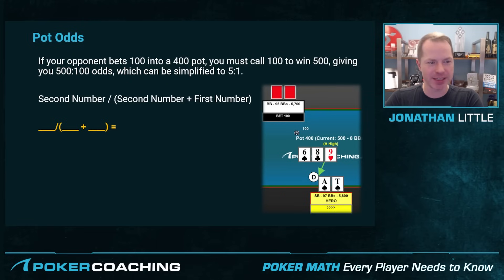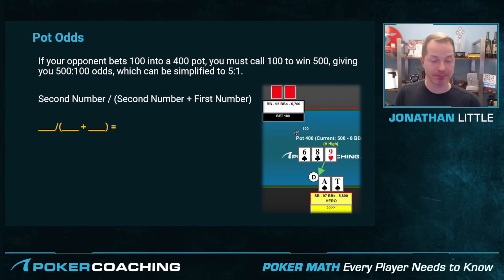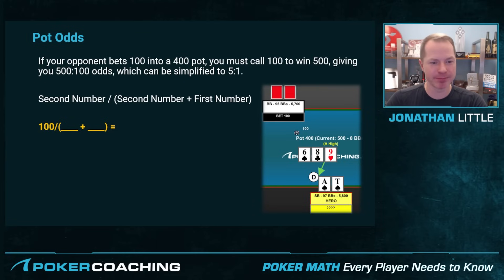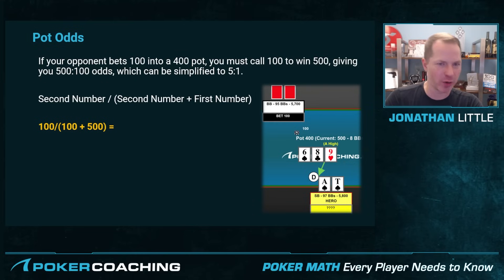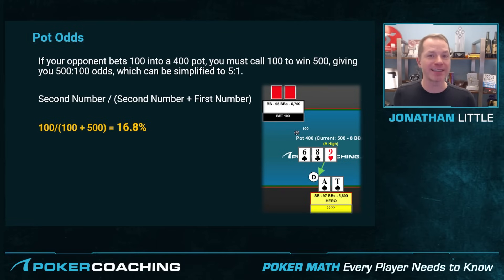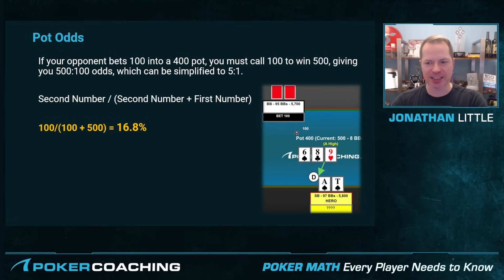Let's go through some examples. Say your opponent bets 100 into a 400 pot. We have to call 100 to win 500, giving us 500 to 100 odds. Using the same formula: 100 divided by 100 plus 500, which is 100 divided by 600, or one divided by six — that is 16.8% of the time. So if we're going to win more than 16.8% of the time, we need to stick around. In this hand we have the ace-ten of spades for two overcards and a gutshot straight draw — that's going to be in perfectly fine shape, so we get to stick around in that spot.